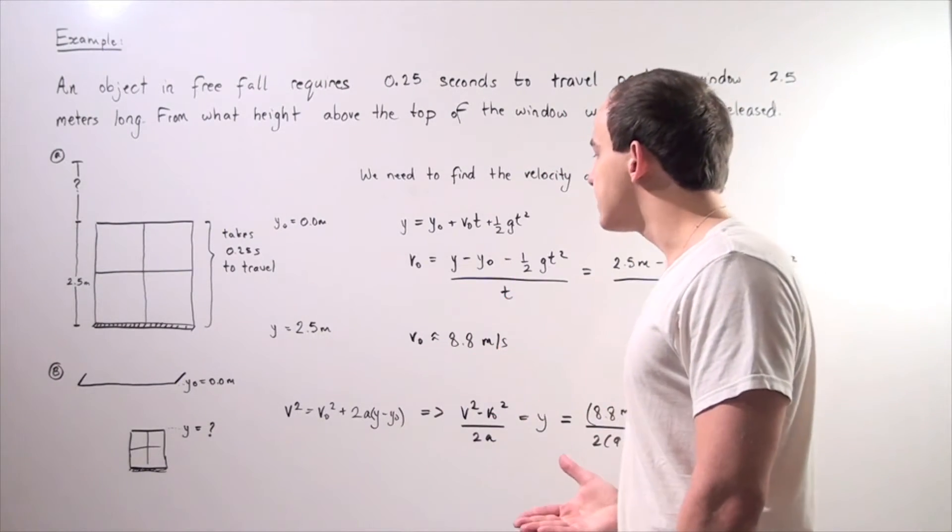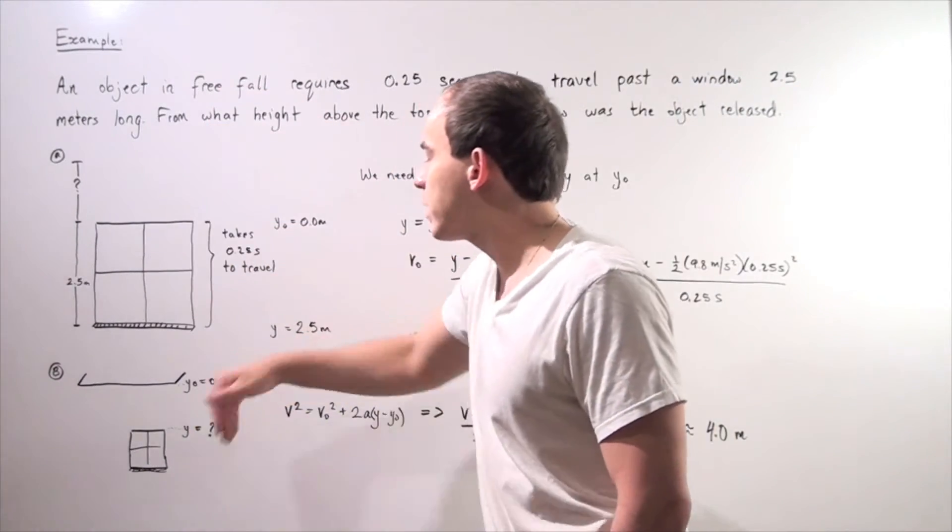We know what our acceleration is and since our velocity points in the same direction as our acceleration, our acceleration is positive. So we set the downward direction to be positive.